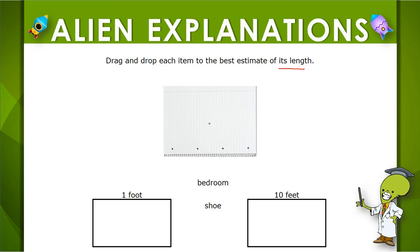So we're estimating length and we're given the two measurements of 1 foot and 10 feet and then these two objects, bedroom and shoe.